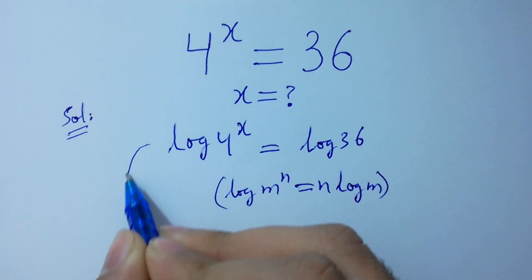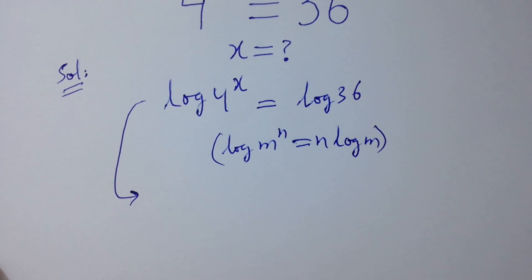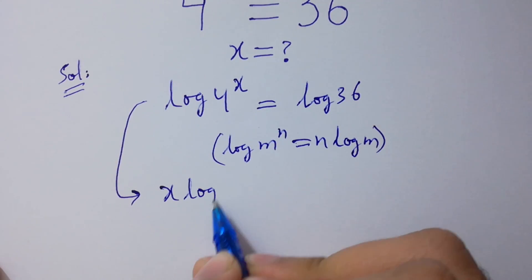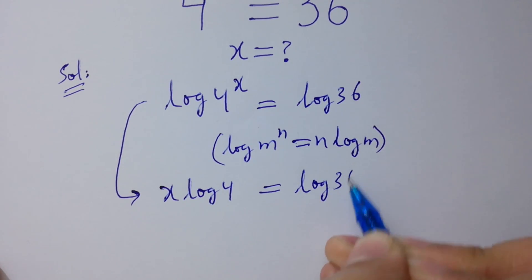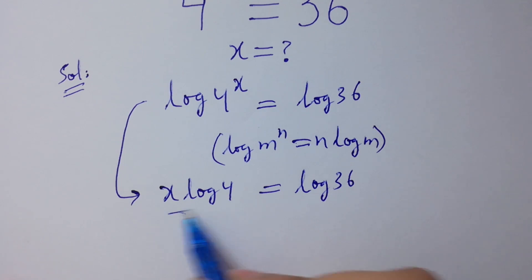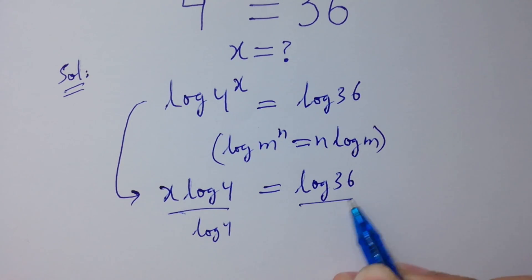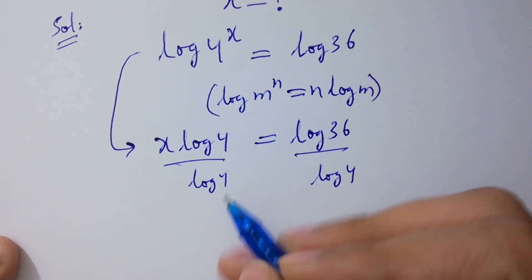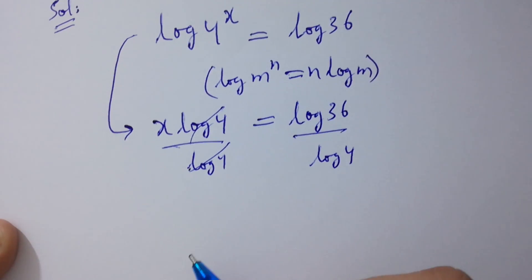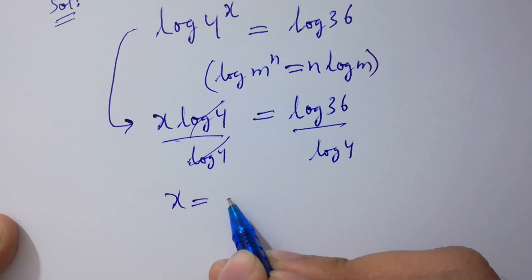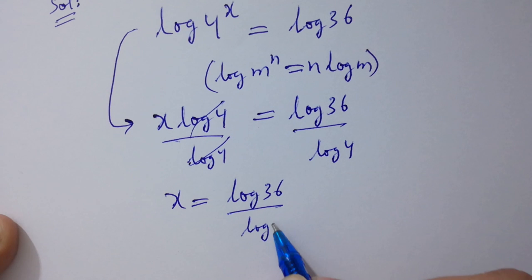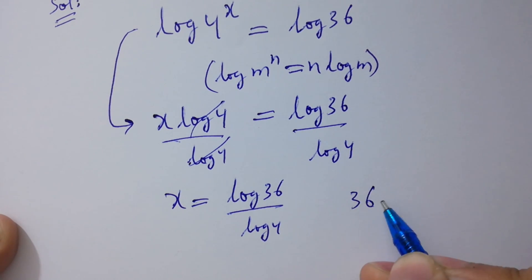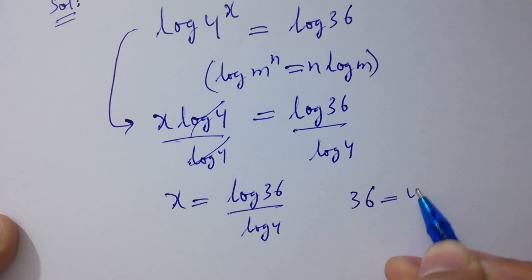We have x log 4 equals log 36. Divide by log 4 on both sides so that x log 4 and log 4 will be cancelled, giving x equals log 36 over log 4. Now, since 36 equals 4 times 9,